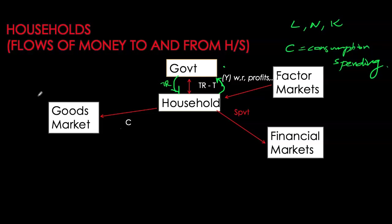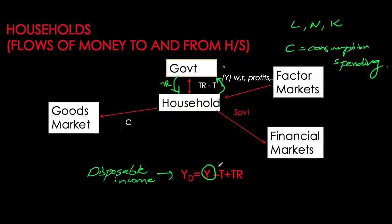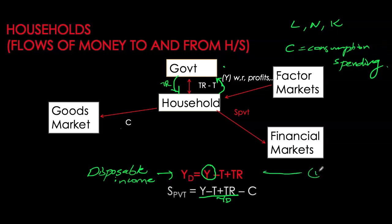Writing these flows as identities: disposable income equals factor payments — wages, rents, interest, and profits — minus taxes paid to the government, plus transfers received from the government. From disposable income, households spend on consumption, and whatever remains is private savings. These are two main national income account identities. As we go through the various sectors and their flows of money, we'll build up further national income accounts.